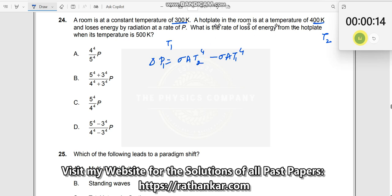Now, what is the rate of loss of energy from the hot plate when its temperature is 500 Kelvin? So now what I will do is write down the values over here so it becomes easy. Sigma A times T2 is 400 to the power of 4 minus 300 to the power of 4.